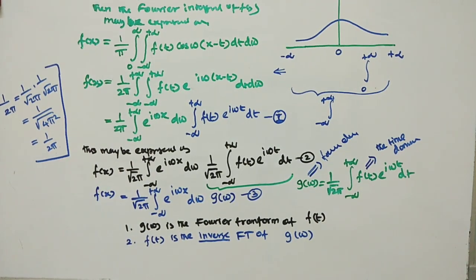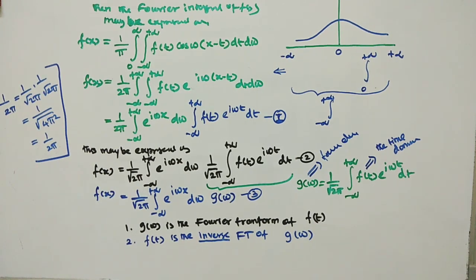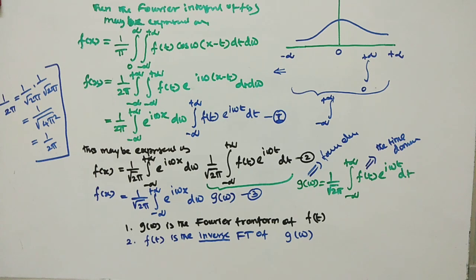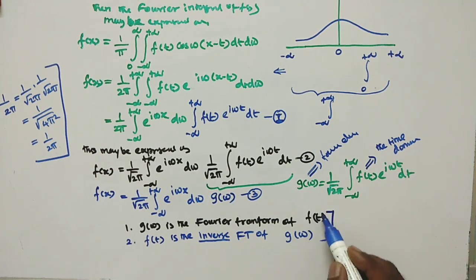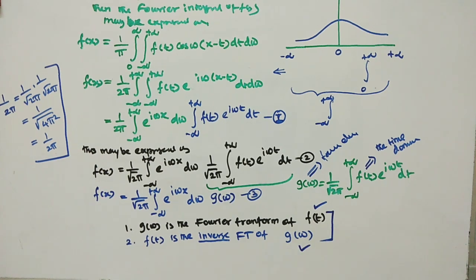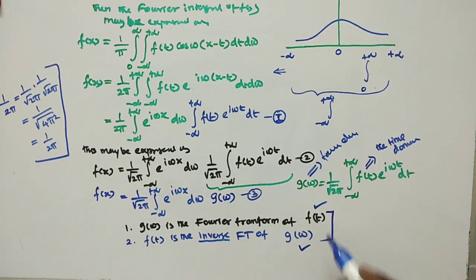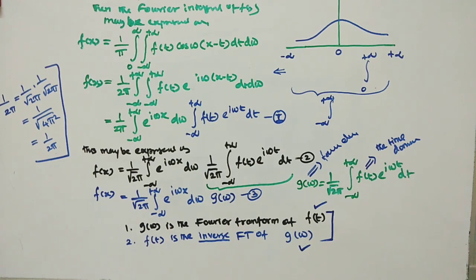I hope you have gotten a clear idea about how to write a Fourier transform equation basically. In the next class, we will discuss the physical meaning of f of t and g of ω. Thank you.